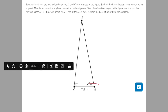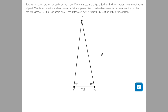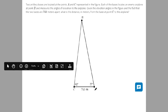Two artillery bases are located at A and C. Each of the bases locates an enemy plane at point B. Given the elevation angles in the figure, so 743 meters across.